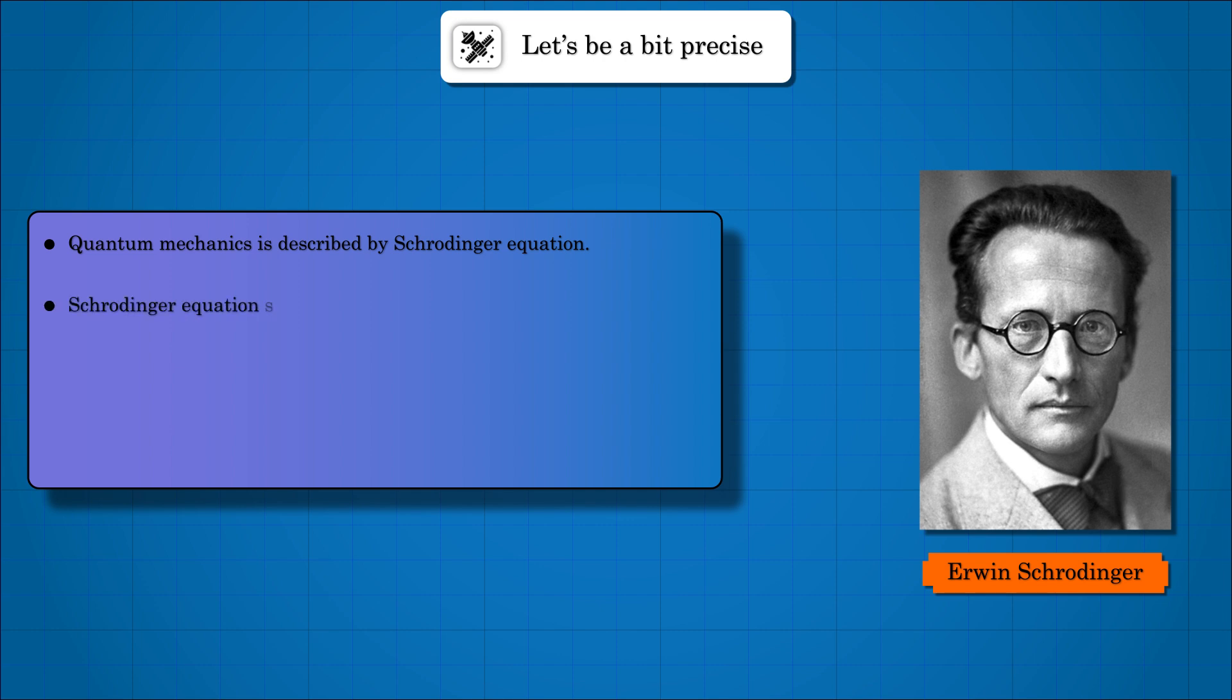A unique feature of the Schrödinger equation is that it takes a pure state into another pure state and a mixed state into another mixed state.